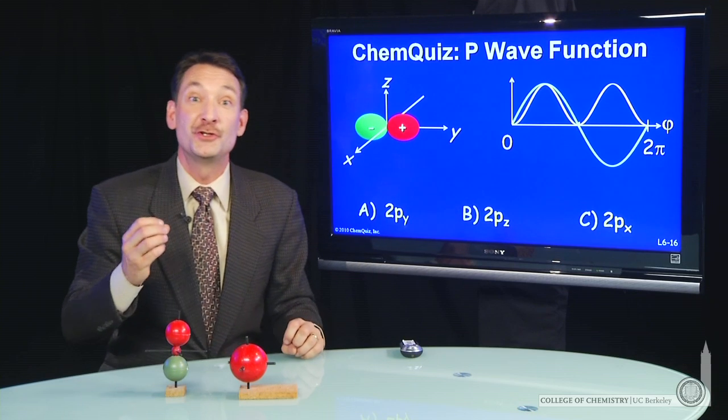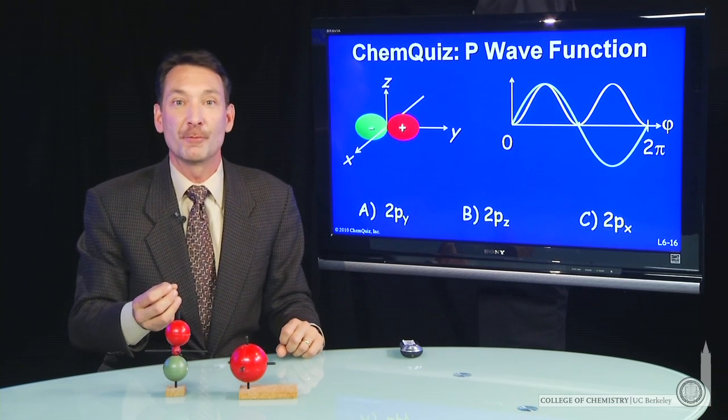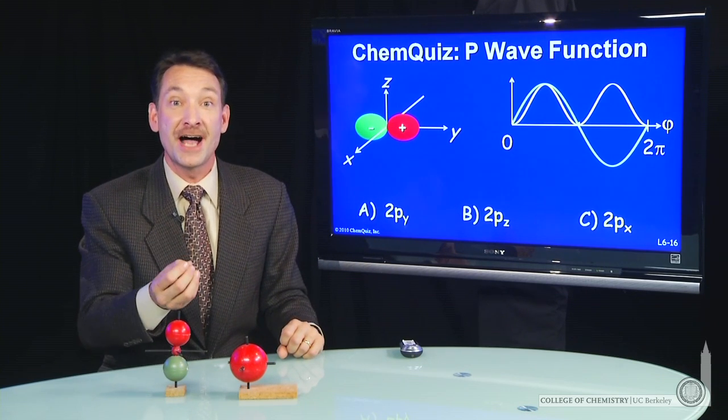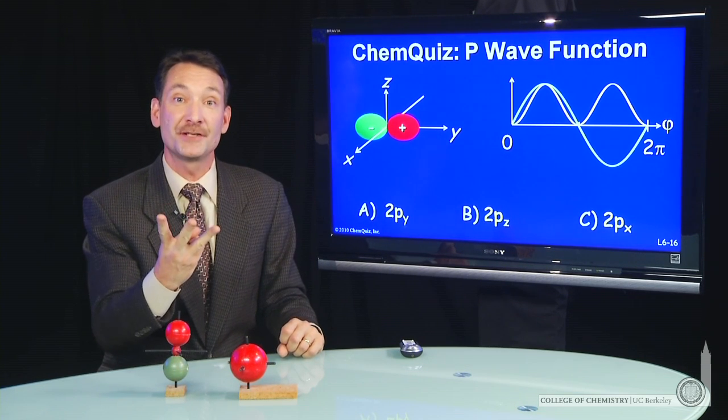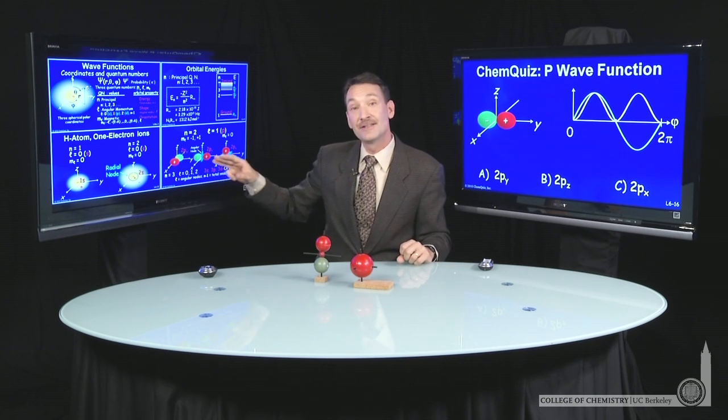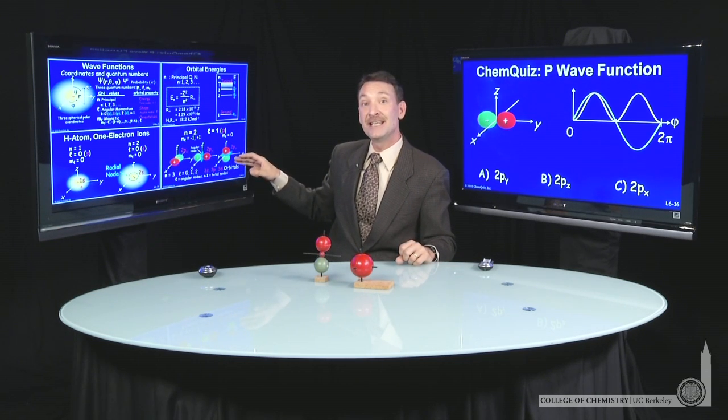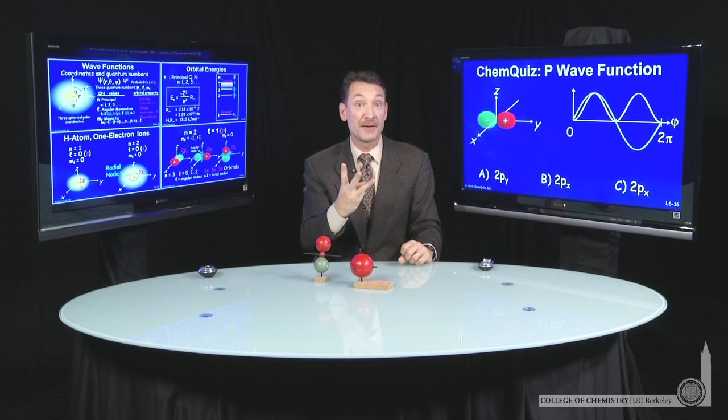We're talking about the 2p orbitals, and we're plotting the wave function psi versus the angle phi from the positive x-axis. Now there's three possible 2p orbitals. Remember, the 2px, the 2py, and the 2pz come from the three values of m sub l.